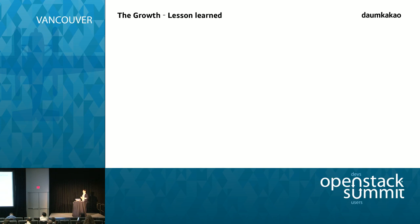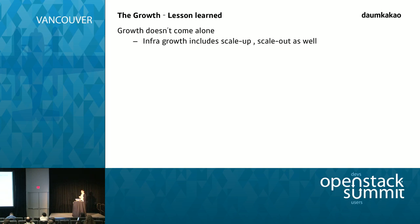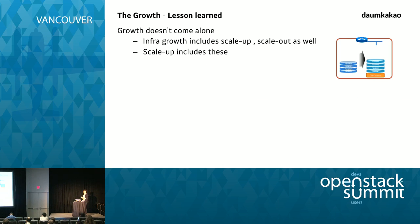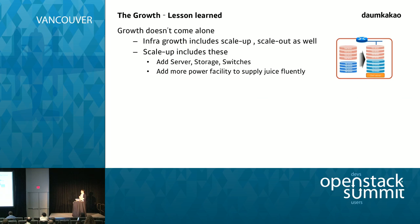The lesson we learned from rapid growth is: growth doesn't come alone. In terms of infrastructure, growth includes scale-up and scale-out at the same time. Scale-up means adding more servers and storage to existing ones — we can plan for that. But scale-out, like setting up new data centers and new availability zones everywhere, is really hard. And it leads to radical changes in the way of preparing, provisioning, monitoring, logging, and developing.